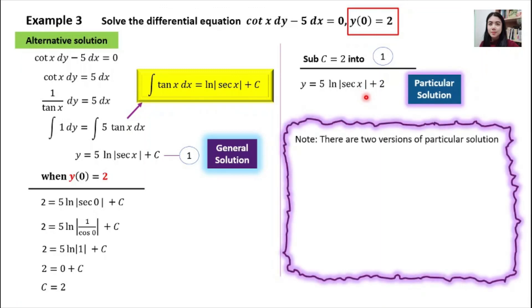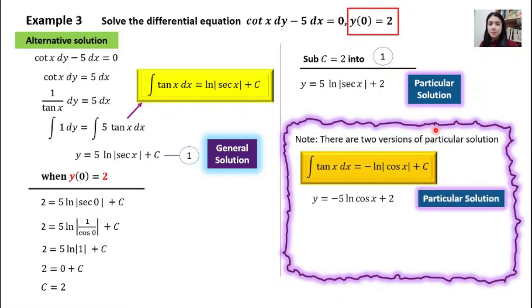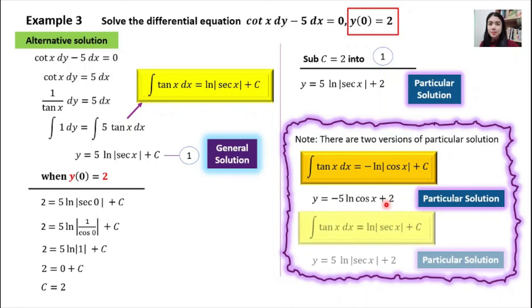Please take note that there are two versions of the particular solution for this example. If you use the formula equal to negative ln|cos x|, you get one particular solution. If you use the formula ln|sec x|, you get the other particular solution.